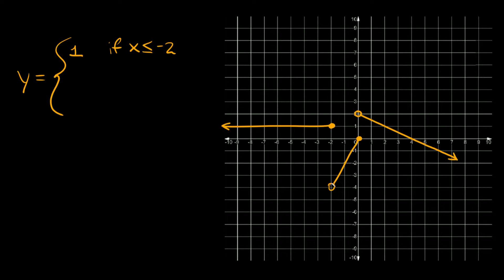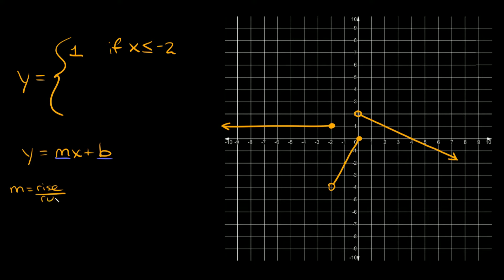Now let's go to this second piece. This one has a slope to it — it's not just a straight vertical or horizontal line — so we're going to use y is equal to mx plus b, slope-intercept form. M is your slope and b is your y-intercept, or in other words where the graph hits the y-axis. To get from one point to another point on the graph, we go up two and then over one.